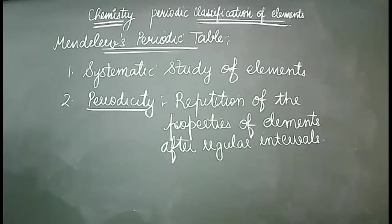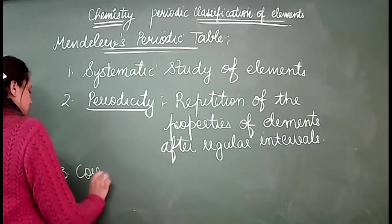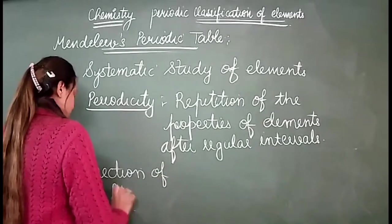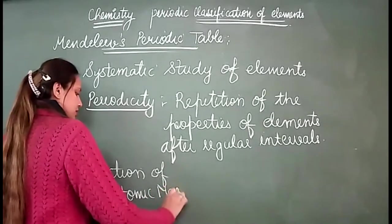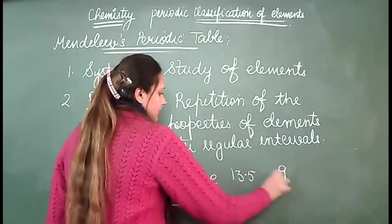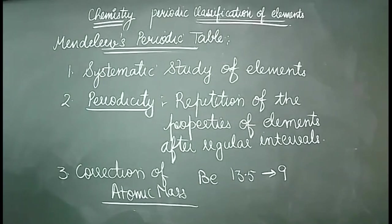Another achievement was that based on the Mendeleev periodic table, he gave some suggestions for correction of atomic masses. For example, beryllium's atomic mass was 13.5, which was corrected to 9. Similarly, other elements like gold, indium, and platinum — their atomic masses were also corrected by Mendeleev.